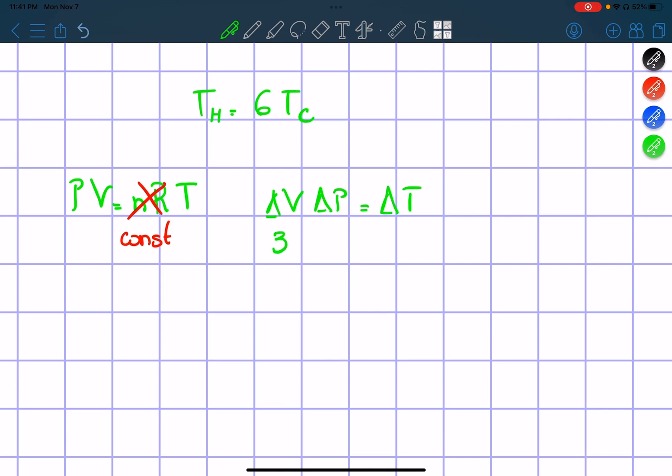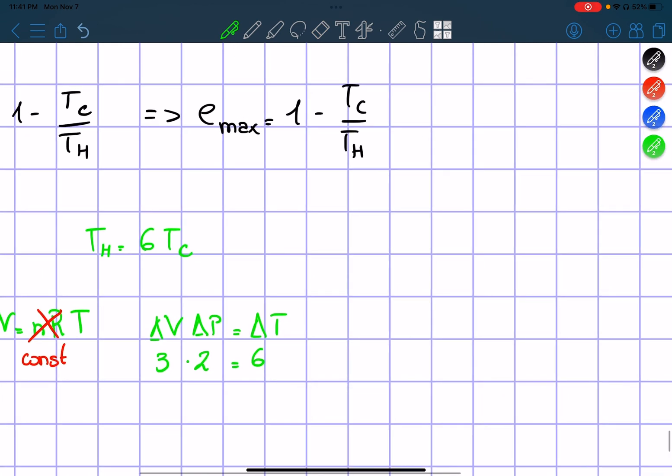and our pressure doubles, it means that our change in temperature has to equal 6. So that's how we get it.